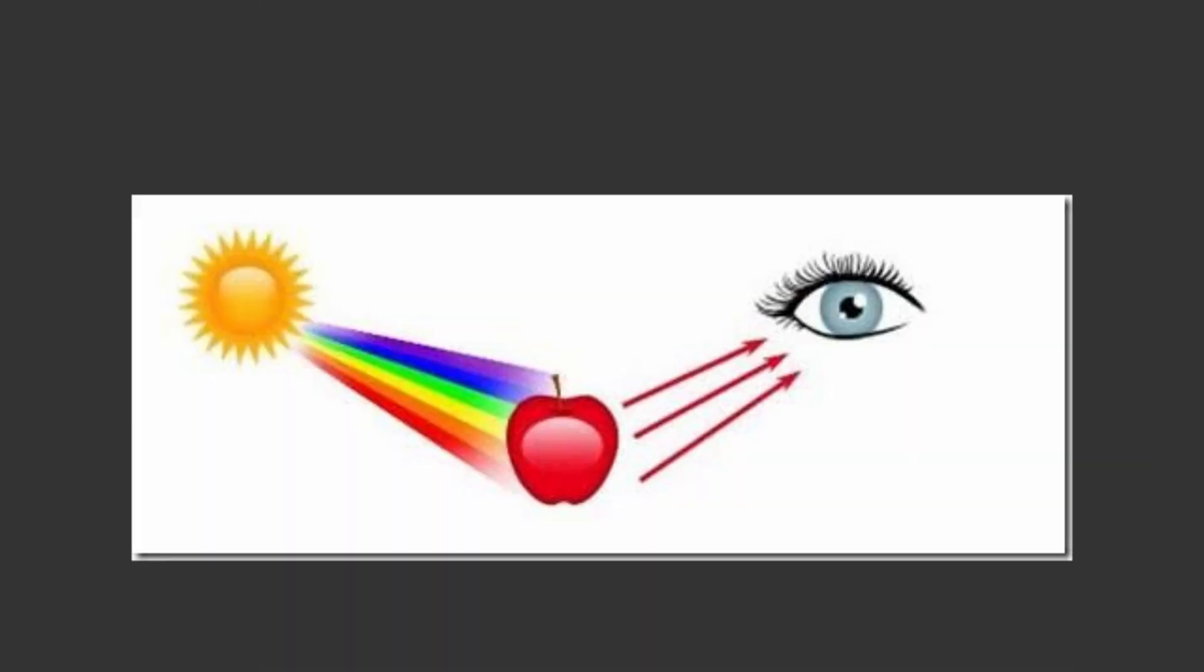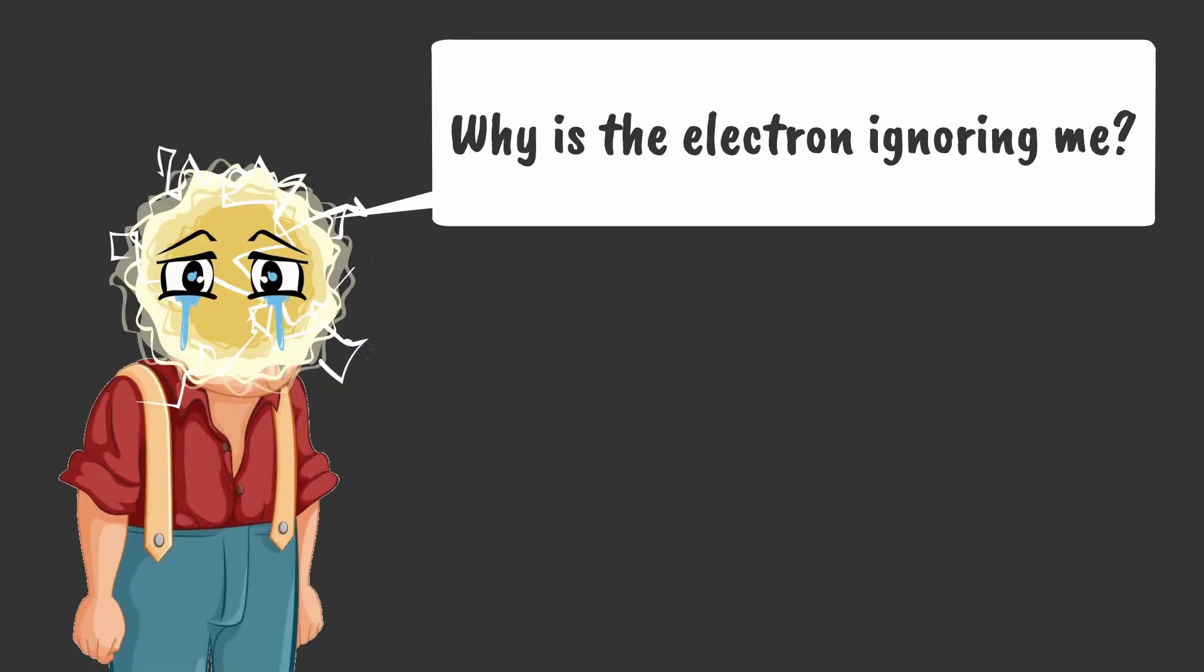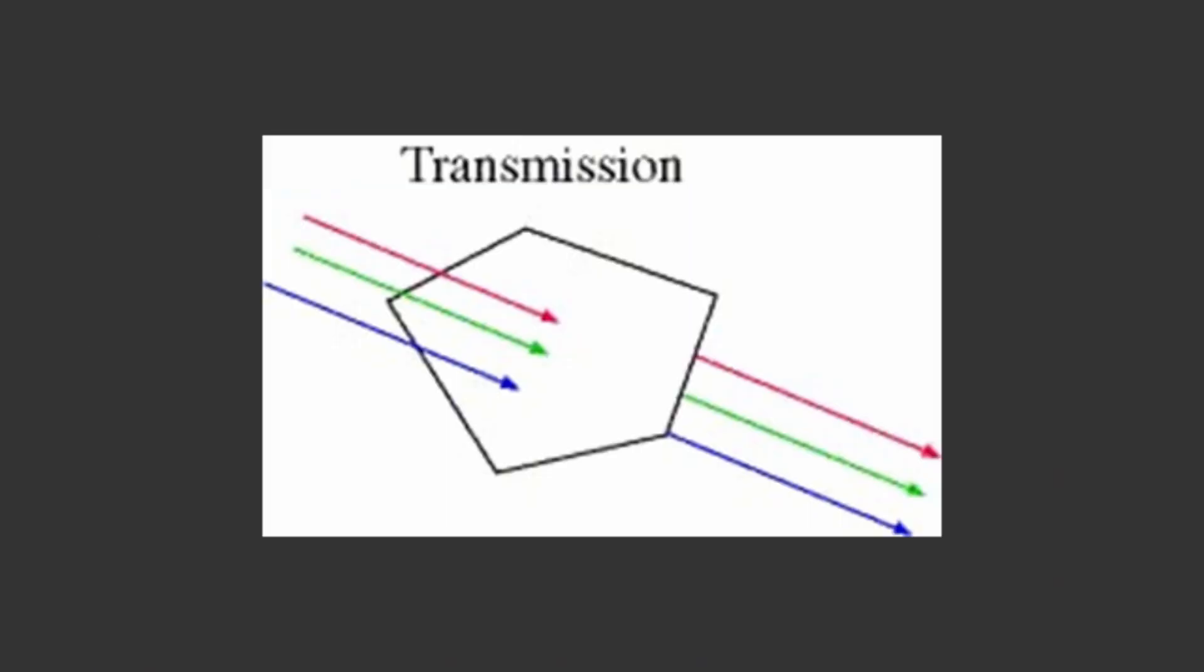Instead of reflecting, the electrons can also ignore the photons, letting them pass through in a process called transmission.